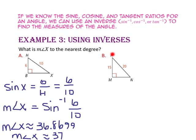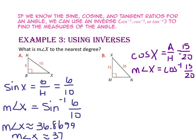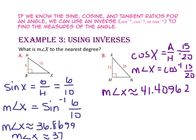In part B, we know the length of the side adjacent to angle X and the length of the hypotenuse, so let's use the cosine ratio. Since we're looking for the measure of angle X, we will use the inverse of cosine. Use your calculator: type in 15 divided by 20, hit the equals button, then the green second key, and the cosine button. Rounded to the nearest degree, the measure of angle X is about 41 degrees.